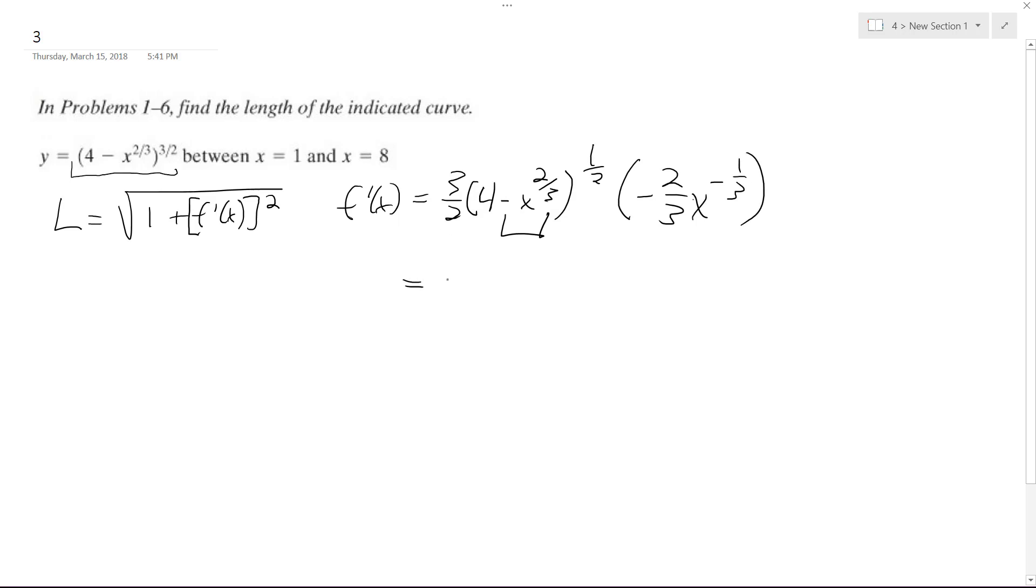So simplify down, this is x raised to the negative 1 third times 4 minus x raised to the 2 thirds, raised to the 1 half.